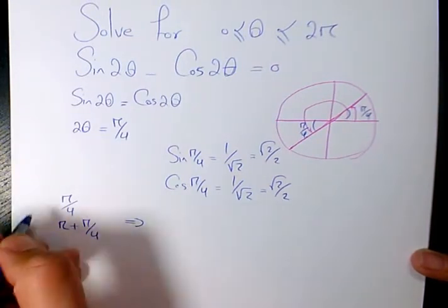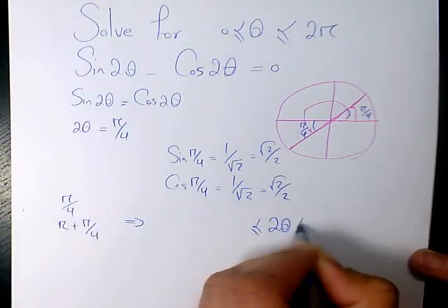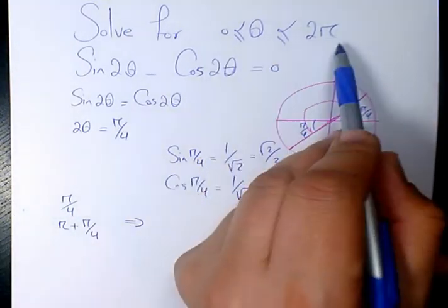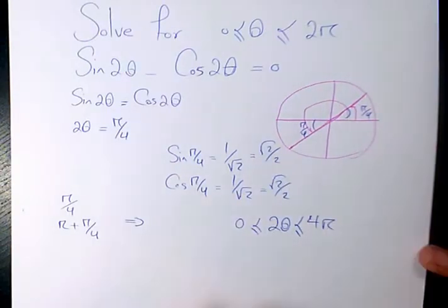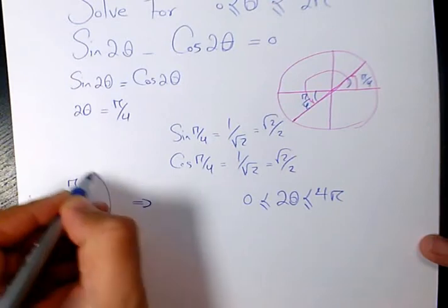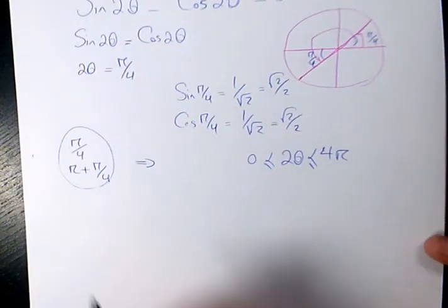That's where for 2 theta. And we know 2 theta, since theta is changing from 0 to 2 pi, 2 theta is changing from 0 to 4 pi. So these two answers are the only answers for the first cycle. We need to consider the second cycle as well.